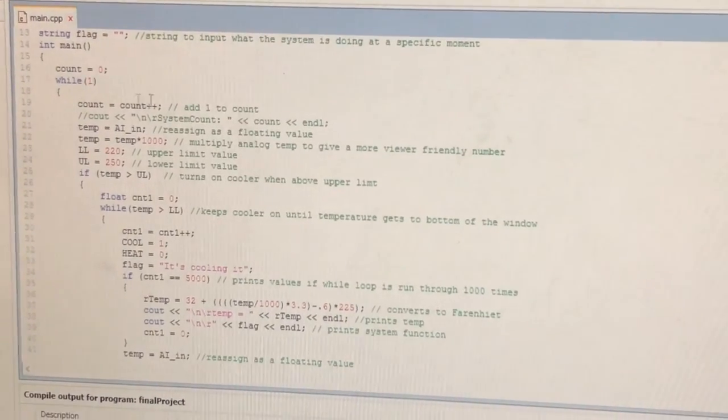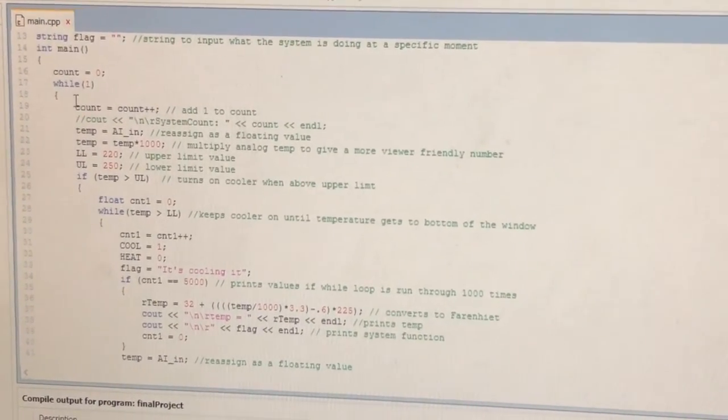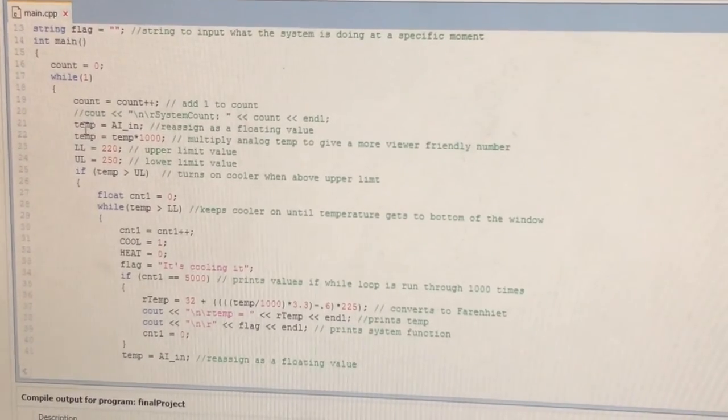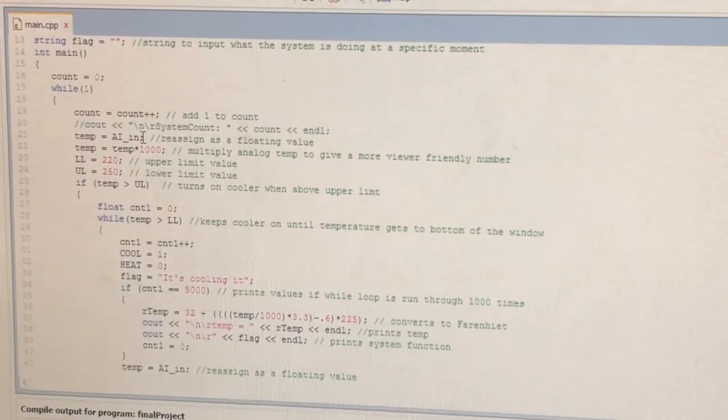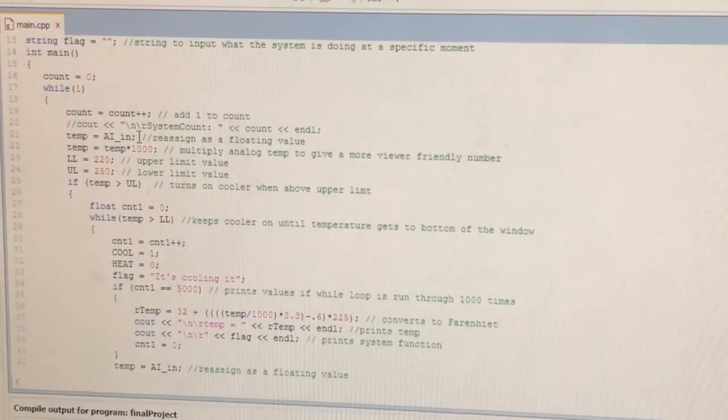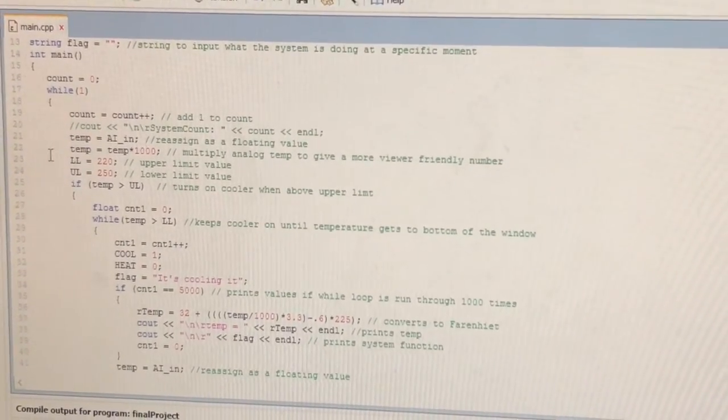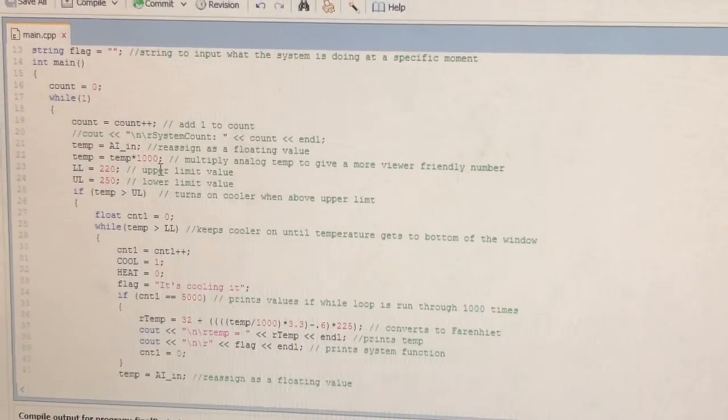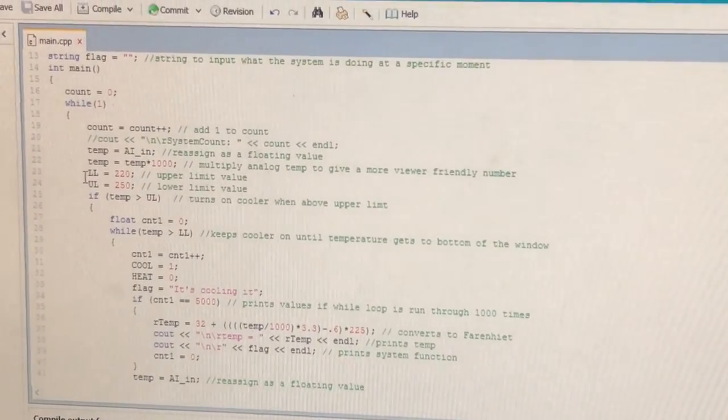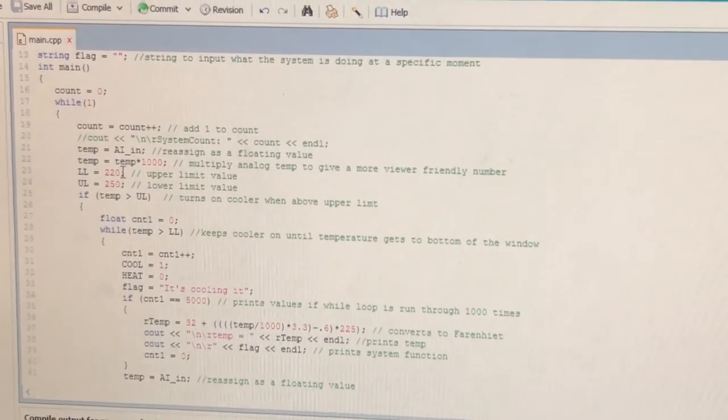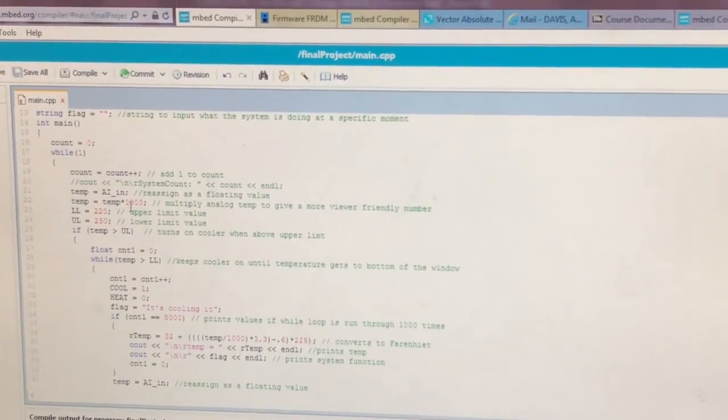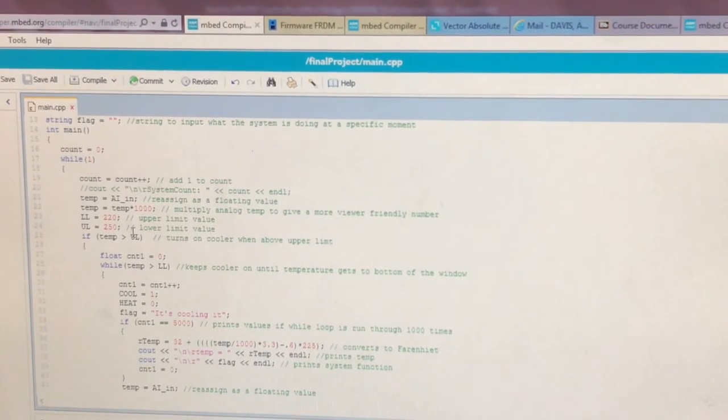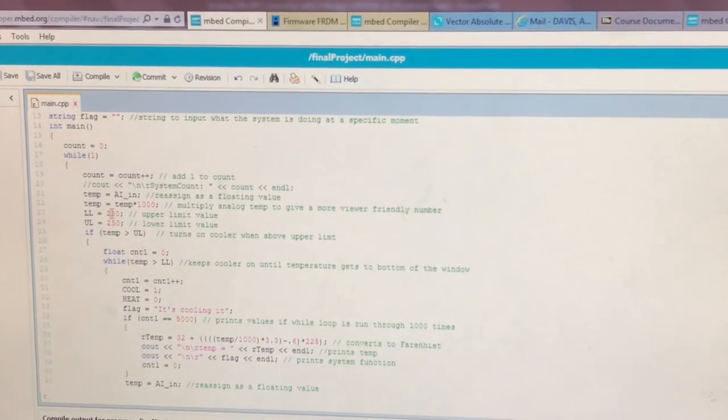Here we add one to the count for each time the while loop is run through. This is initializing our temperature to the input read in from the thermocouple. We multiply it times a thousand just to make this number easier to deal with. These are upper and lower limits. Here we have the lower and upper limits as analog values in mbed.